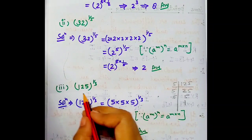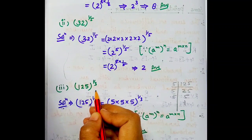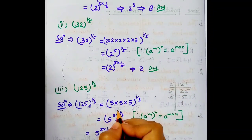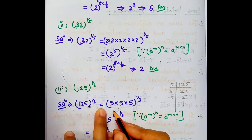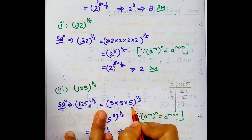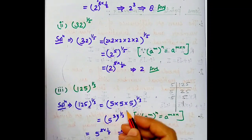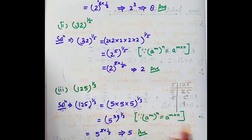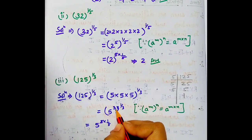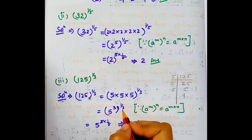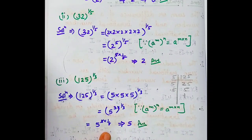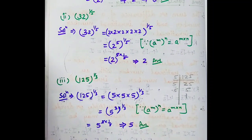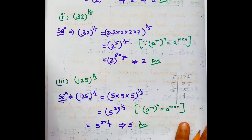Third part: 125 to the power 1 by 3. Yahan pe hum 125 ka prime factorization karke usse factors ke form mein likhenge. 5 ko jab 3 times multiply karenge to hume 125 milega. To is form mein likhenge: 5 to the power 3, whole to the power 1 by 3. Yahan pe bhi power of power ka law use ho raha hai. Dono powers multiply ho jayengi, answer hume 5 milega.